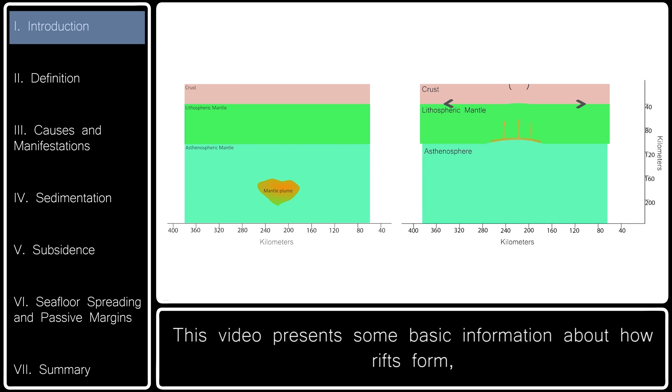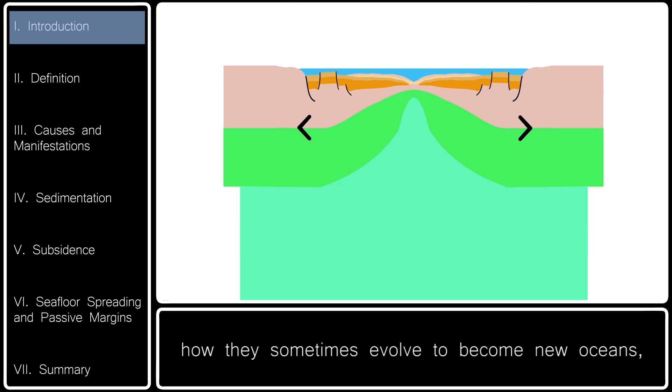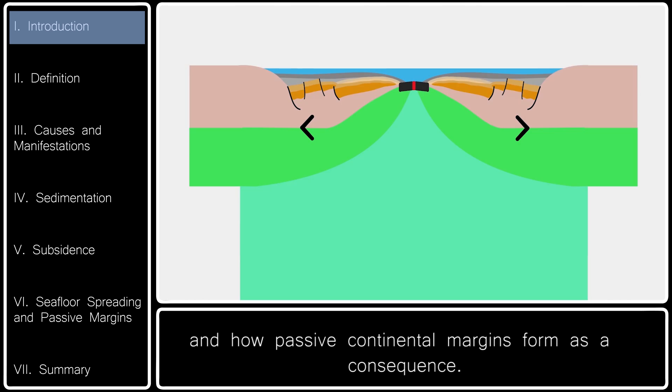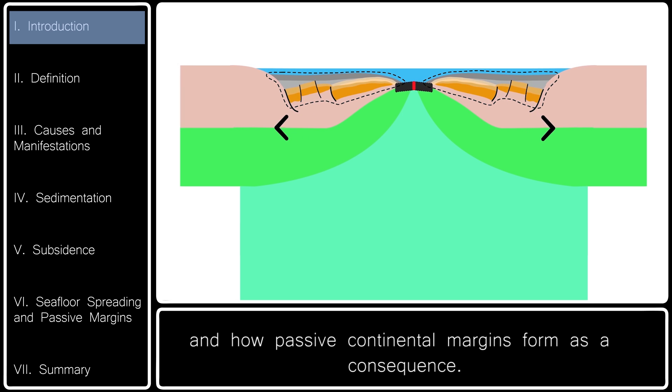This video presents some basic information about how rifts form, how they sometimes evolve to become new oceans, and how passive continental margins form as a consequence.